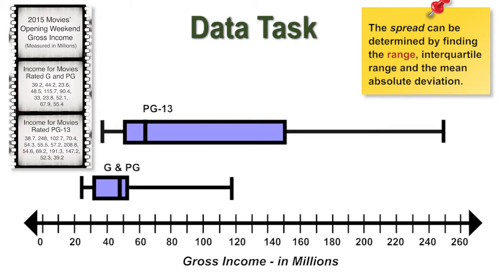The overall picture of both sets of data show that the G and PG movies have more consistency in their opening weekends. Even though the PG-13 movies had a larger mean and median, the variability was greater and the data was more inconsistent. This tells us that the mean and median are not the best measures to determine success. So the question is, does the consistent set of data show more success, or does the higher and spread out data show success? You decide.